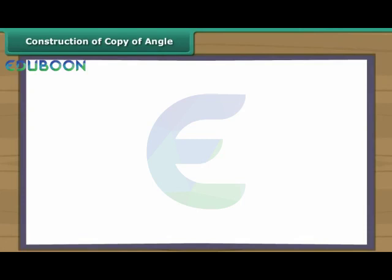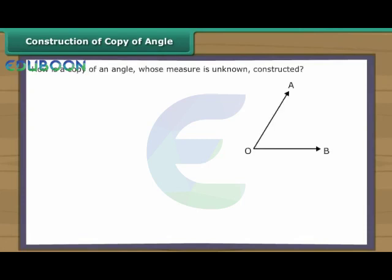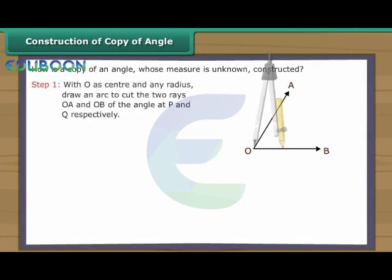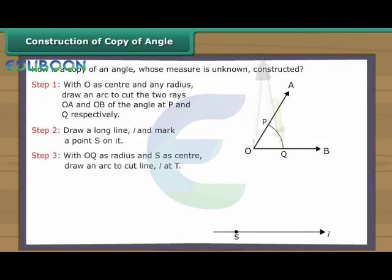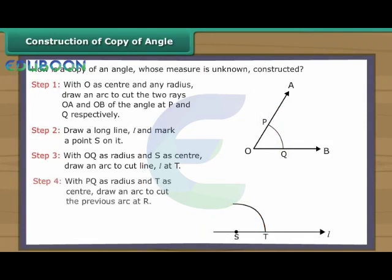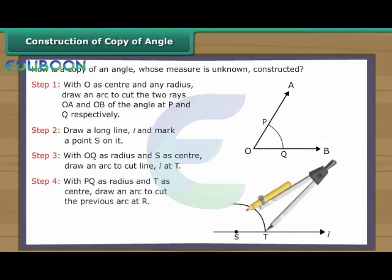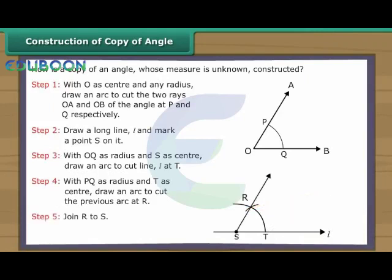Construction of copy of angle. How do we construct a copy of an angle whose measure is unknown? Angle AOB is given. With O as centre and any radius, draw an arc to cut the two rays OA and OB at P and Q respectively. Draw a long line L and mark a point S on it. With OQ as radius and S as centre, draw an arc to cut line L at T. With PQ as radius and T as centre, draw an arc to cut the previous arc at R. Join R to S. Angle RST is equal to angle AOB.